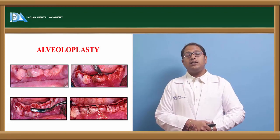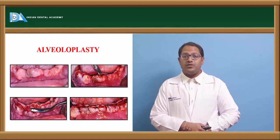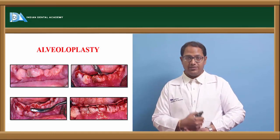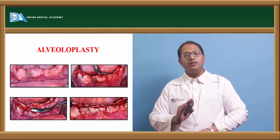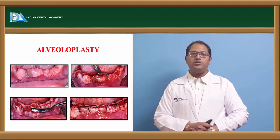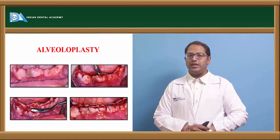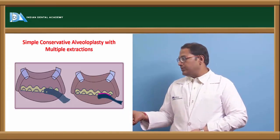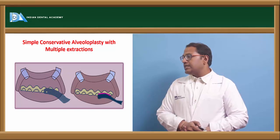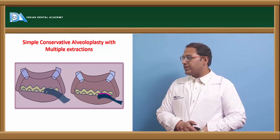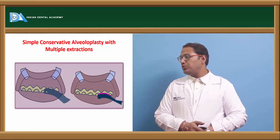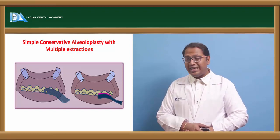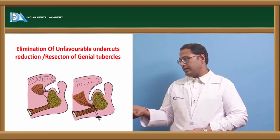Secondary alveoloplasty is done during denture fabrication when a sharp edge is discovered. We need to raise the flap completely and then, with the help of a rongeur or bone file, plane out that particular alveolar bone. In simple conservative alveoloplasty with multiple extractions, the sharp spicules of the alveolar crest are removed post-extraction.